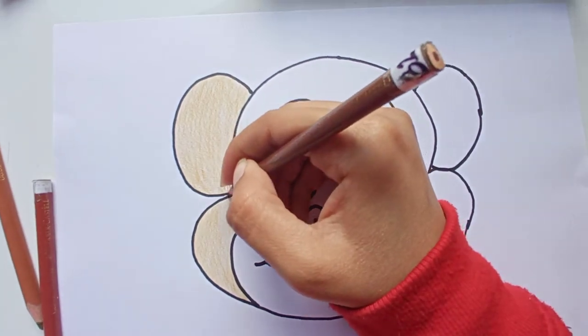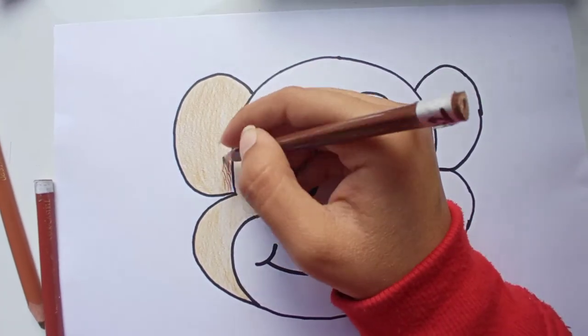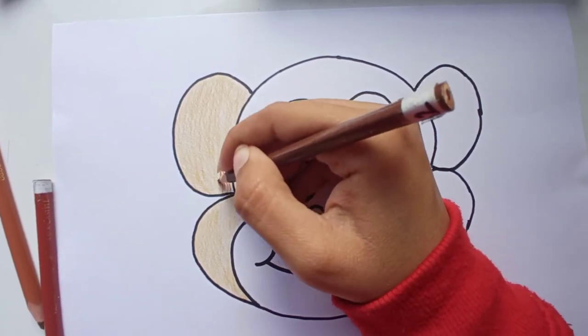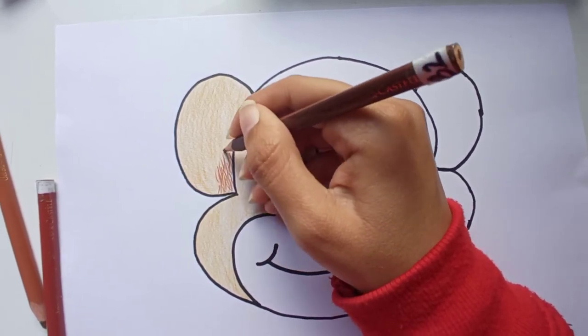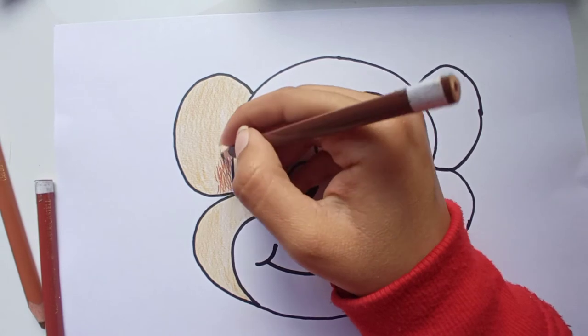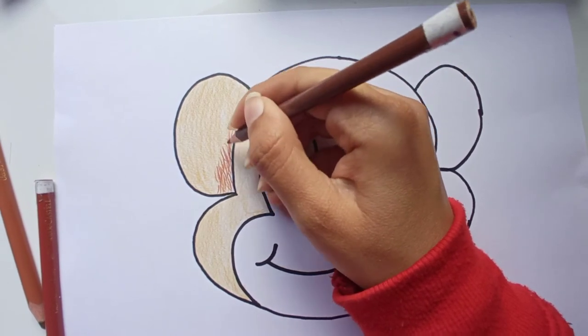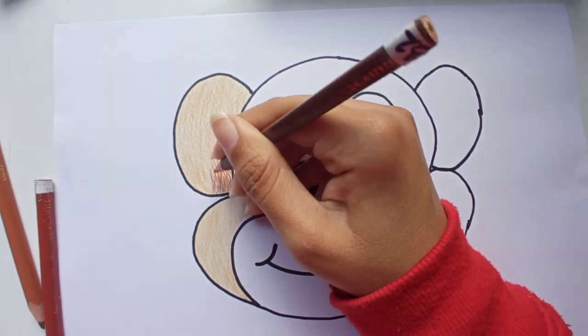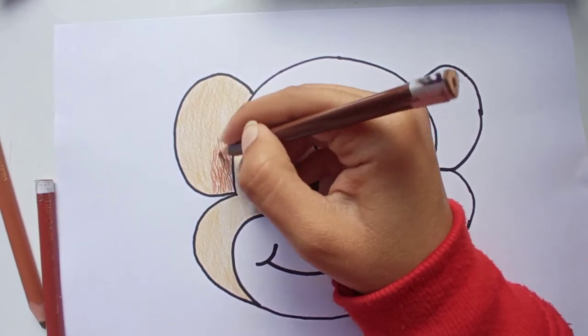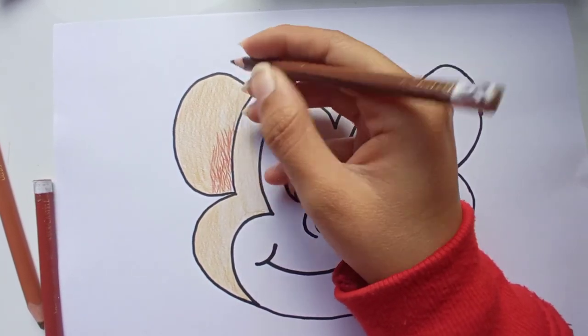And now once I have colored the base on the ear, and above it you can color with dark brown like hairs. Monkeys used to have hair, so you can give the effect of hair like this. Just keep on making lines like this to give the effect of hairs.